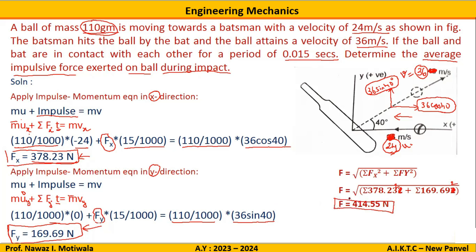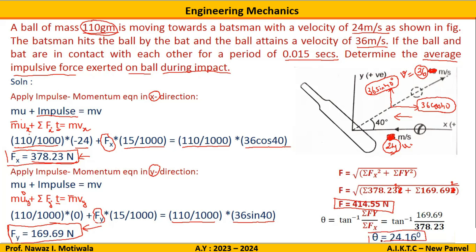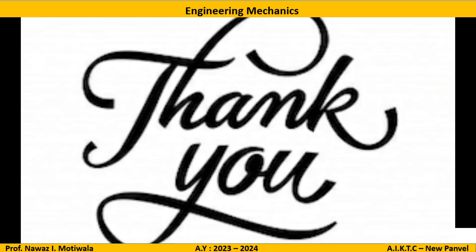Since force is a vector quantity, we also need its direction. Using the formula θ = tan⁻¹(F_Y / F_X) and substituting the values, we get θ = 24.16 degrees. This completes the solution. Thank you.